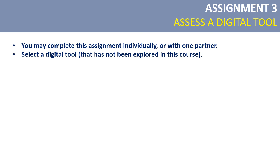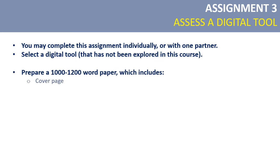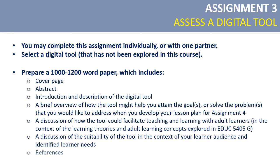For assignment three, assessing a digital tool, you can work individually or with one partner. You'll select a digital tool that hasn't been formally explored in the course and prepare a short paper in standard APA format that gives an introduction and description of the tool, an overview of how that tool might help you attain the goals or solve the problems you'd like to address in your lesson plan for assignment four, a discussion of how the tool could facilitate teaching and learning with adult learners in the context of what we've been looking at in the course, and a discussion of the suitability of the tool given your learner audience and identified learner needs.